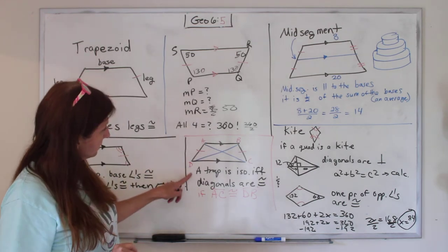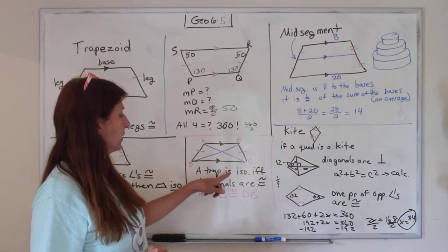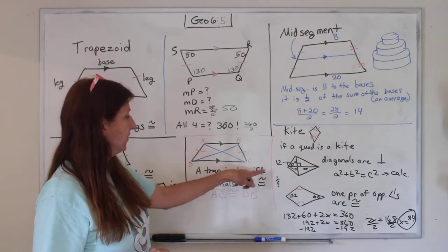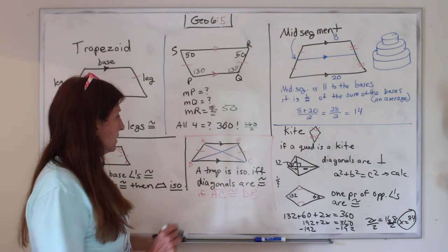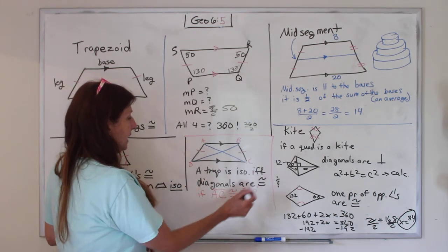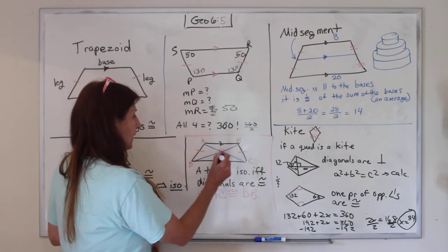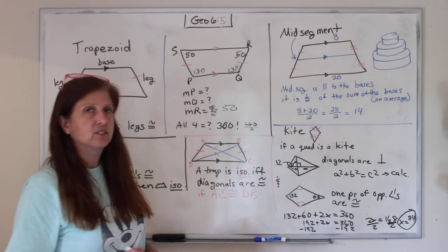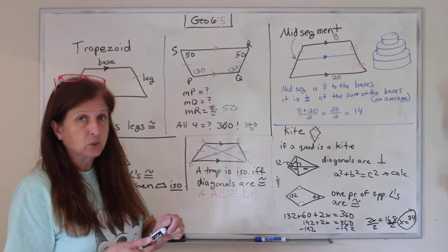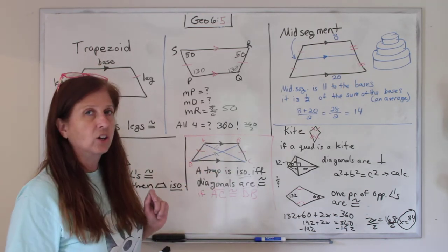All right, here's a trapezoid, and here's another theorem. It says a trapezoid is isosceles if and only if diagonals are congruent. So if AC is congruent to DB, if those are the same, then it is an isosceles trapezoid. Now, you can have trapezoid without an isosceles, but for it to be isosceles, diagonals are congruent.